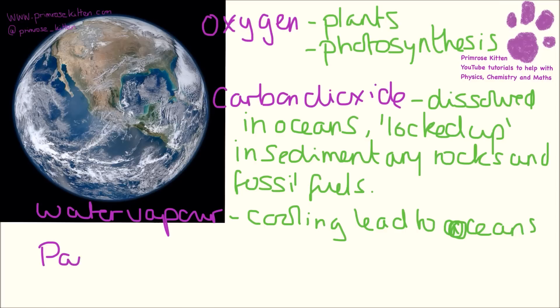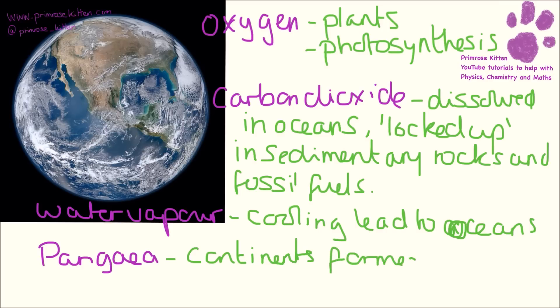If we think about the structure of the Earth, we started off with Pangaea. Because of all the convection currents going on in the mantle, things moved around and we had continents being formed. And because of all these continents forming and rubbing against each other, we are also going to be seeing a change in the structure of the Earth.